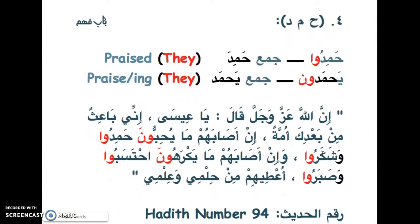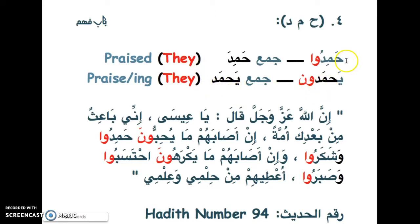Example number four comes from the pattern 'fahima yafham', from the door of 'hamida yahma'. 'Hamida' means 'he praised'; 'yahma' means 'he praises'. 'Hamidu' means 'they praised' — plural form of 'hamida'. 'Yahmadoon' is the plural of 'yahmad', meaning 'they are praising' or 'they praise' in the present.